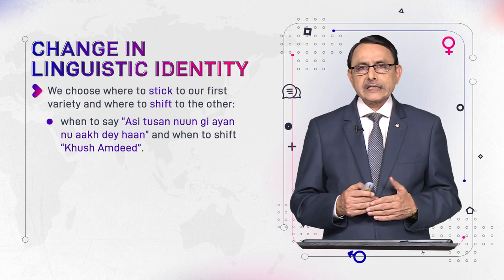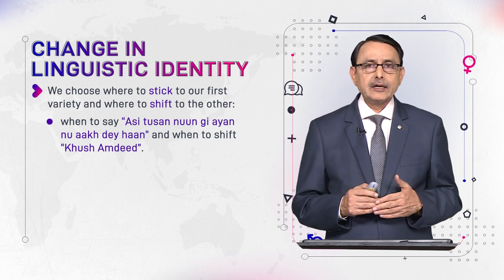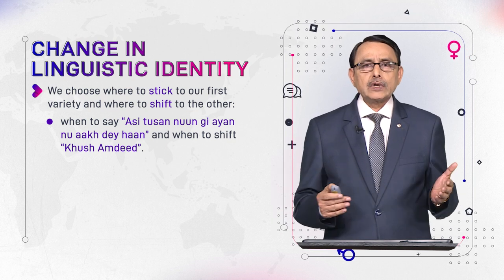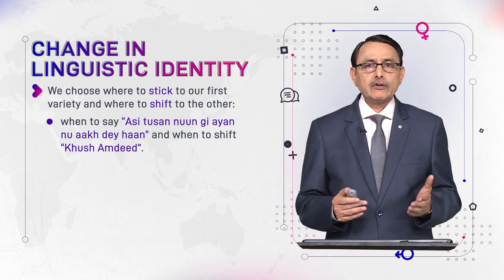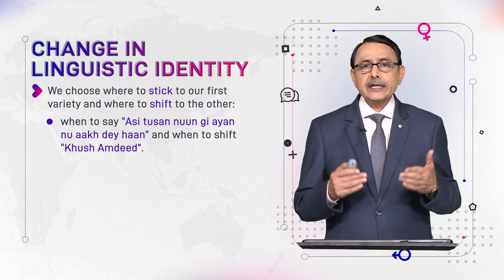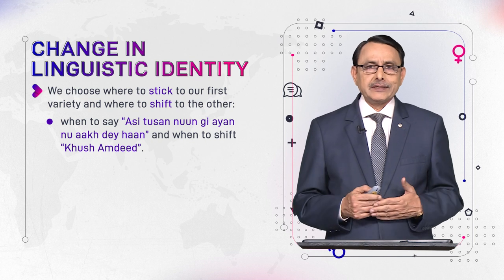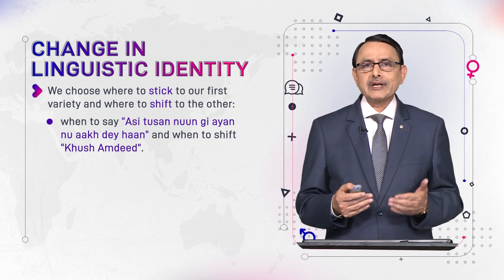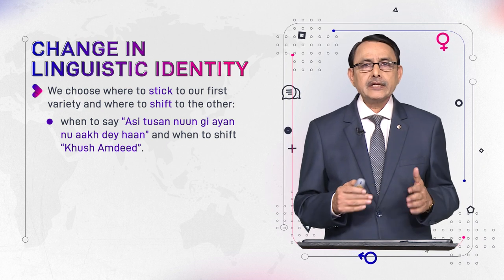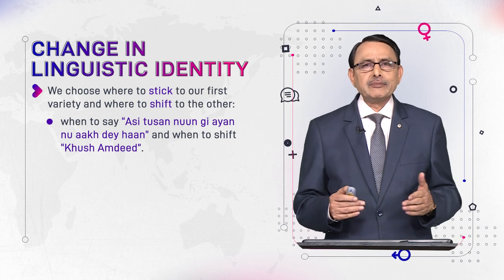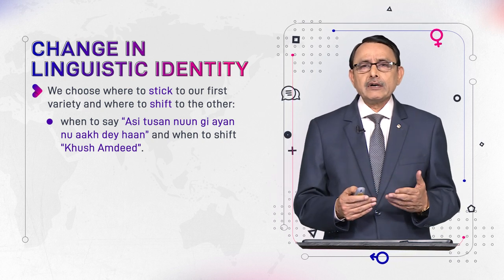For example, in one context, if our addressee is a Sikh guest, we say 'Asi Tushanu Ji Ayanu Akhnaya.' This is one variety of Punjabi because the addressee is a Sikh. But if the addressee is a non-Sikh Punjabi, we can say 'Khusham Deid.' In our Punjabi variety, Persian and Arabic words are also used, whereas in Indian Punjabi they don't mix Punjabi with such languages. This is how we can switch to other varieties.